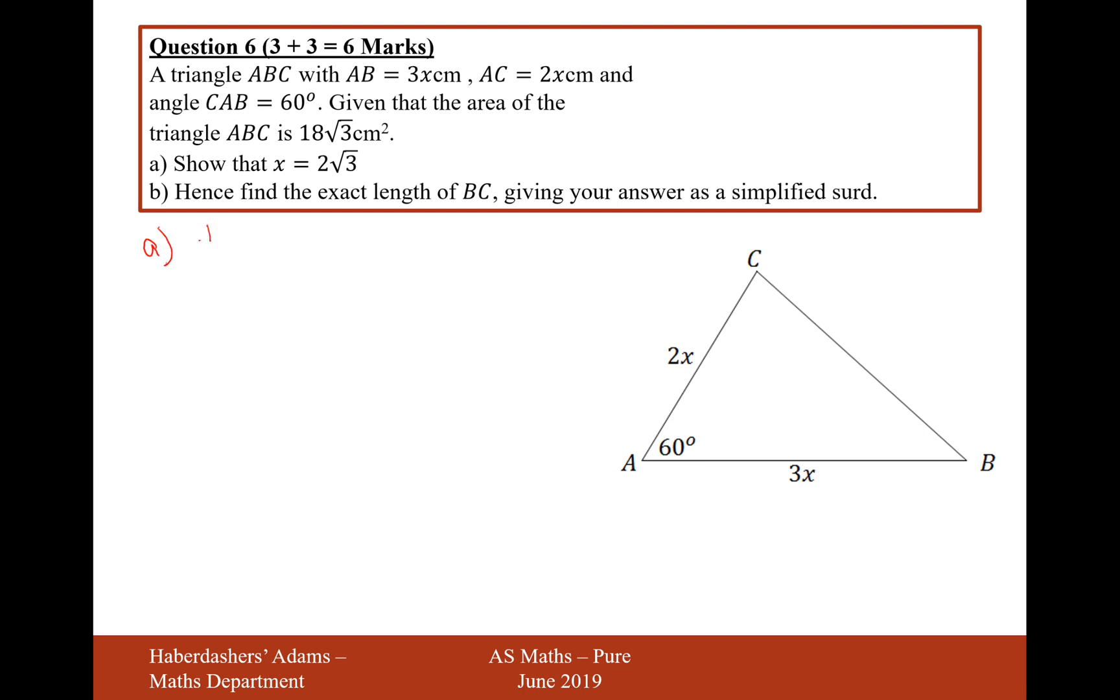We're using the formula here, half AB sine C is the formula for the area of a triangle. This is going to equal 18 root 3. So let's substitute in those values.